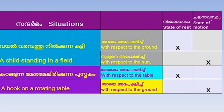The state of rest and state of motion: while you have a child standing in a field, with respect to the ground, the child is at rest. This is a state of motion — to move forward. The study involves a book on a rotating table.